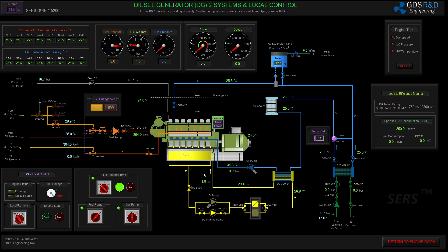The lube oil system looks stable. I will line up sea water cooling and fresh water cooling system for diesel generator number two. All of the systems essential to diesel generator number two are looking stable, and I am ready to start diesel generator number two.